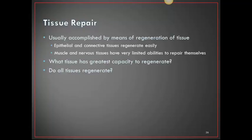Tissue repair is usually accomplished by regeneration. Epithelial and connective tissues regenerate easily, while muscle and nervous tissues have very limited abilities to repair themselves. Epithelial and connective tissues have the greatest capacity to regenerate. Whether all tissues regenerate is really unknown; however, nervous tissue has limited capacity, and the younger you are, the more likely you are to regenerate nervous tissue.